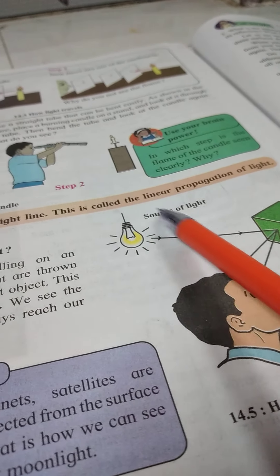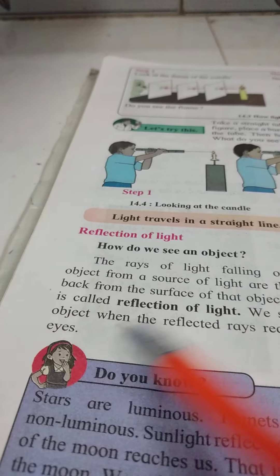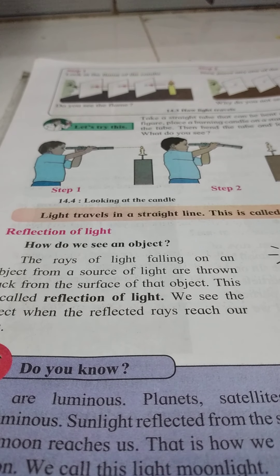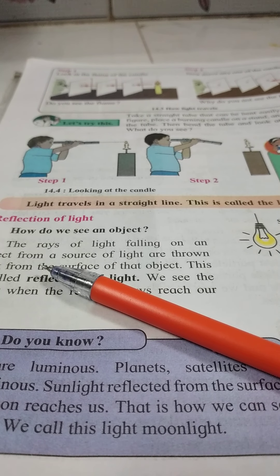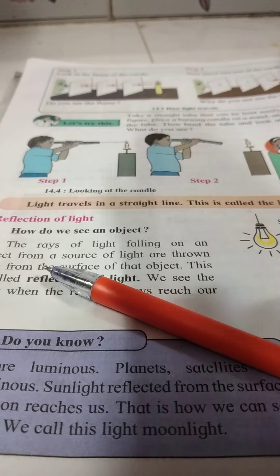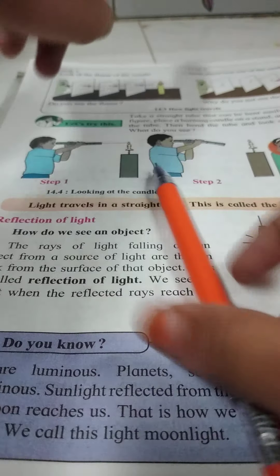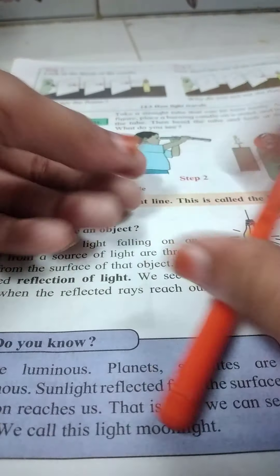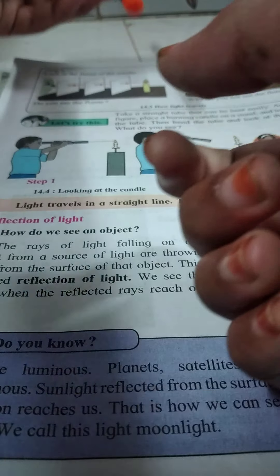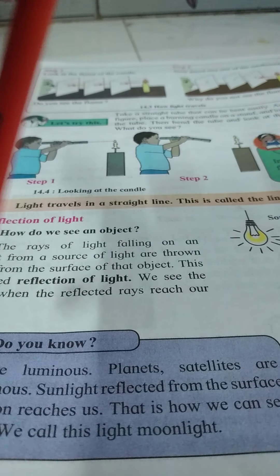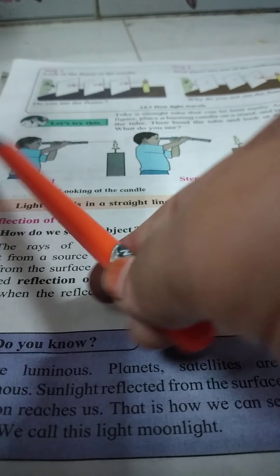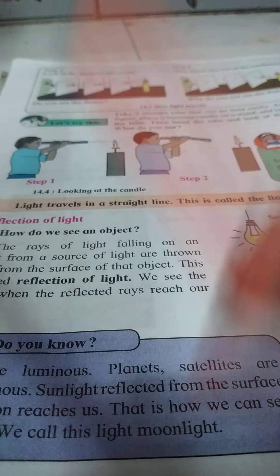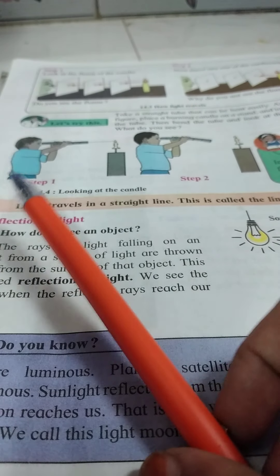This is called the linear propagation of light. Light travels in a straight line — this is called linear propagation. And if some light is going in a curved path, that is called non-linear propagation of light.